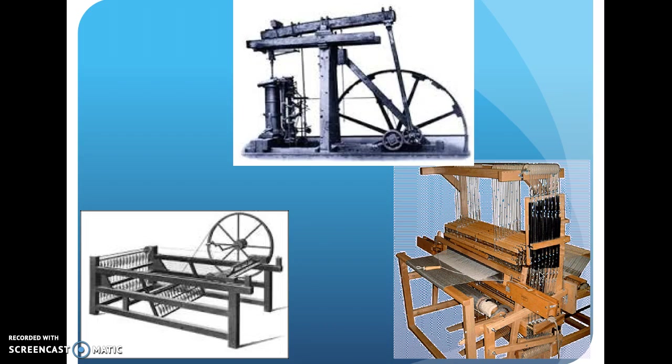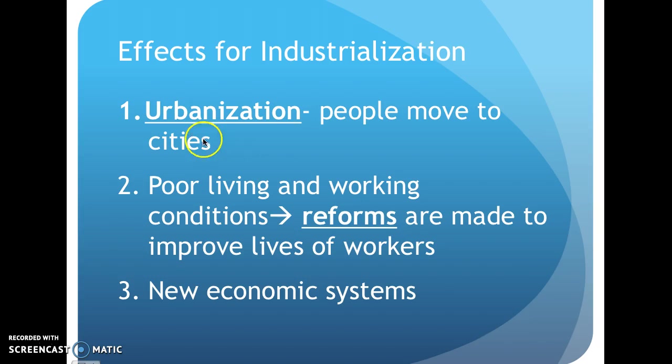Now we move on to the effects of the Industrial Revolution. A big one is urbanization — people moving to the city for the first time. Because people are moving to the city, we have very poor living and working conditions. People are working 10 to 12 hours, being mistreated, not getting paid a living wage, so they even have to send their children to work as well. We're talking awful, awful conditions.